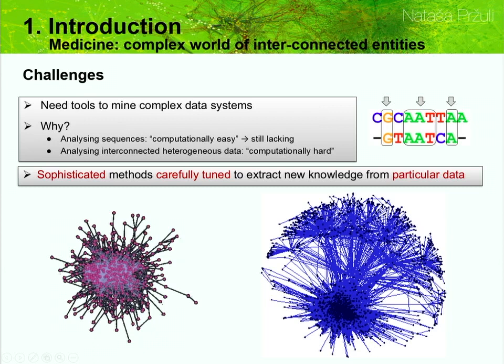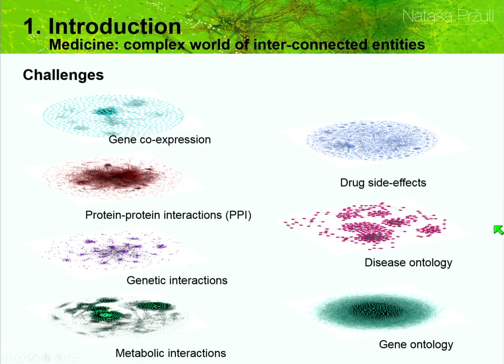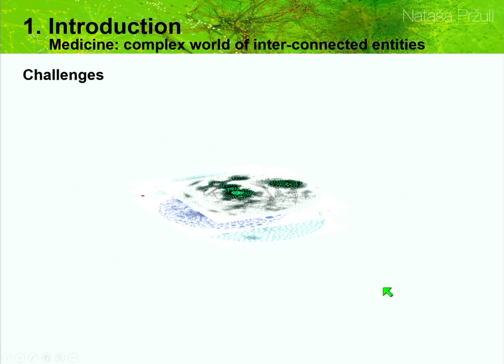One simple example is just simple comparison of large networks — that problem is computationally intractable. Stephen Cook proved that mathematically in 1971, which means that you cannot exactly compare or align large networks. So we have to do that approximately. Extracting information from each of these layers is computationally intractable, so we do it approximately. But the even greater challenge is how do we integrate them to see what they collectively tell us — that is what we will be talking about today.